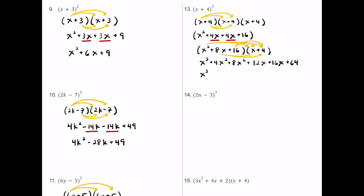For the x squared terms, 4x squared plus 8x squared is 12x squared. For the x terms, 32x plus 16x is 48x. And we have the constant plus 64 at the end. So the final simplified product of x plus 4 cubed is x cubed plus 12x squared plus 48x plus 64.